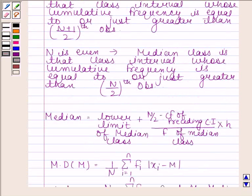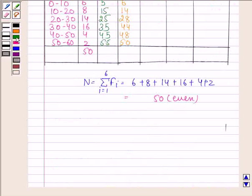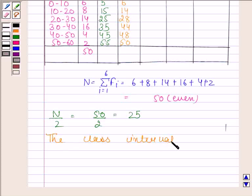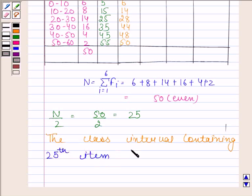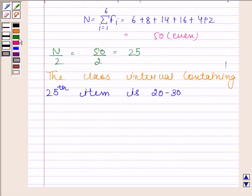We know that if N is even, then the median class is that class interval whose cumulative frequency is equal to or just greater than the N/2 th observation. So N/2 equals 50/2, which equals 25. The class interval containing the 25th item is 20 to 30, so 20–30 is the median class.